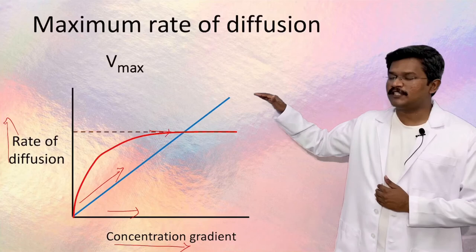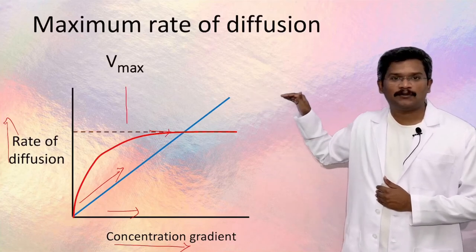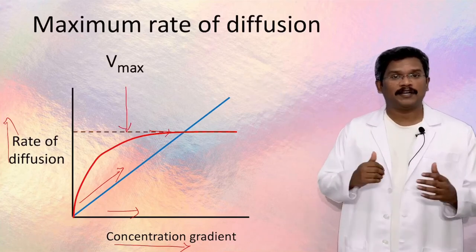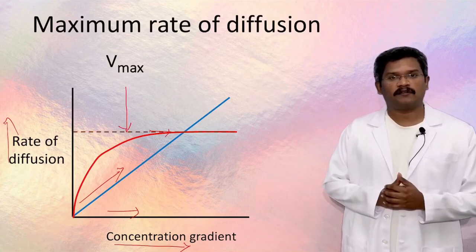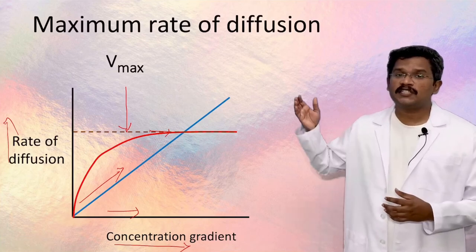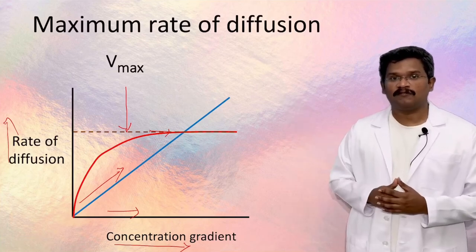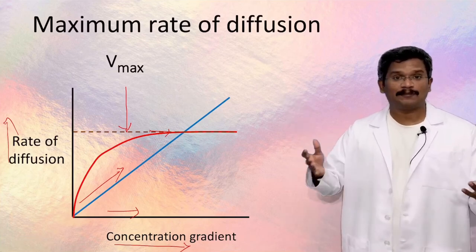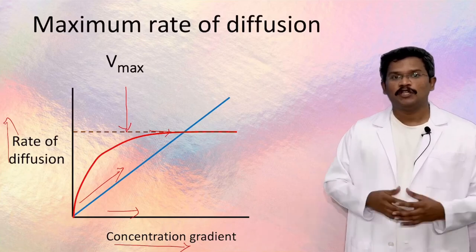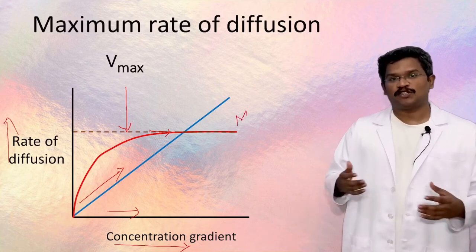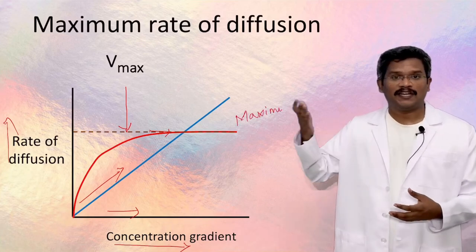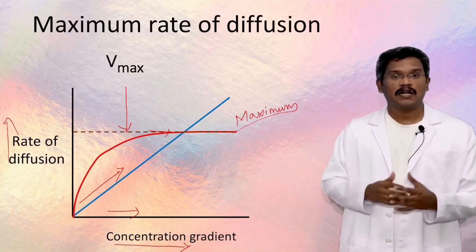In facilitated diffusion, though there is an initial increase in the rate of transport, eventually it reaches a maximum — it reaches a plateau — and this is called the maximum rate of transport, or Vmax. This is because the proteins involved in facilitated diffusion reach a maximum capacity to transport a substance.